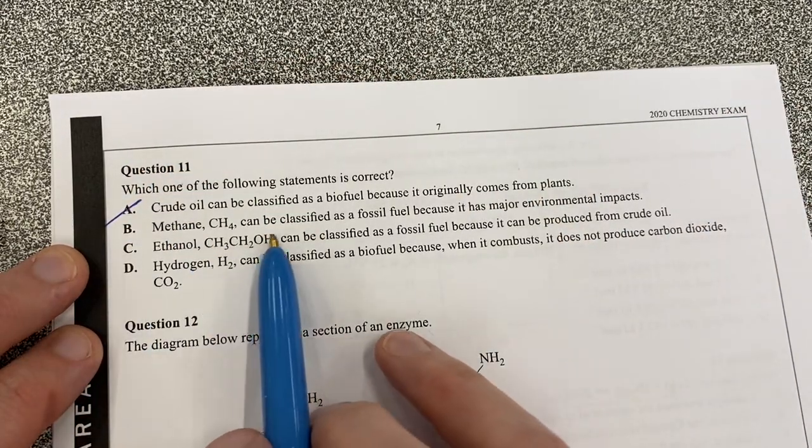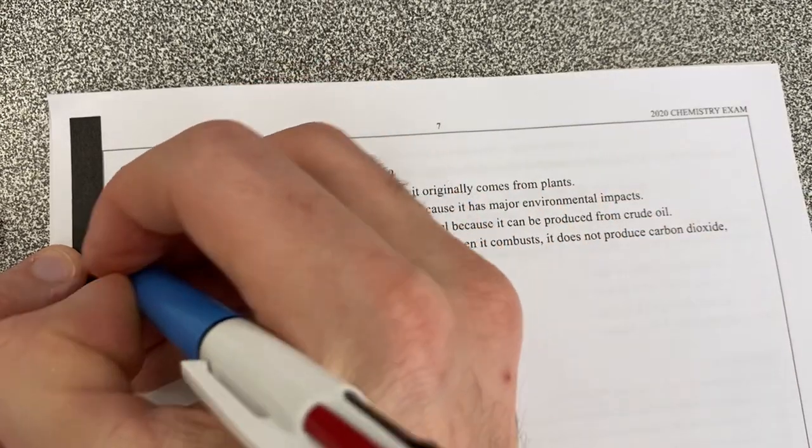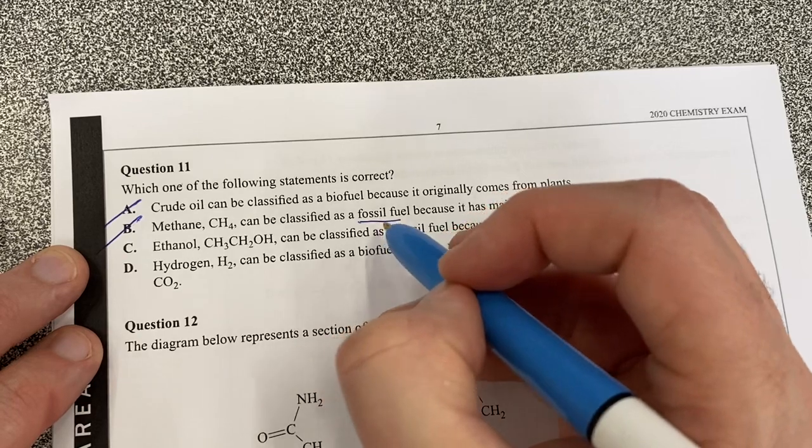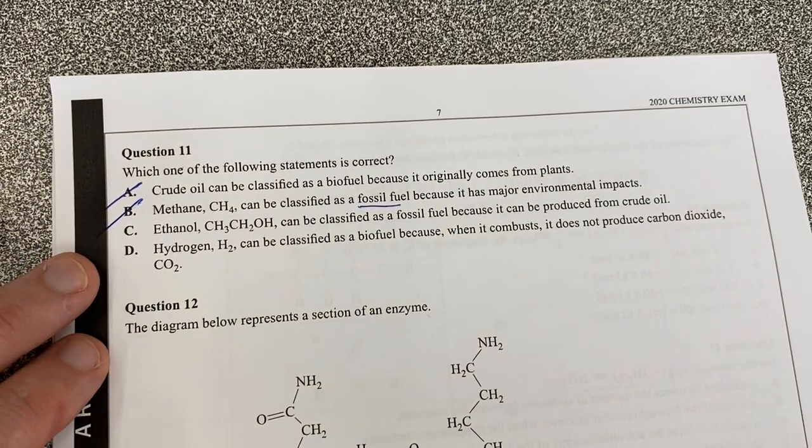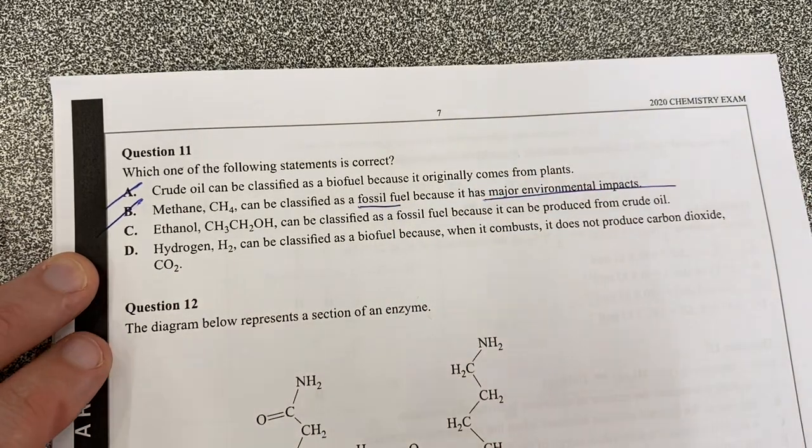Crude oil is a fossil fuel. Methane can be classified as a fossil fuel because it has major environmental impacts. That is not the reason for a fossil fuel. Fossil fuels means that they're going to run out eventually and that they take millions of years. So that explanation does not link in with what it actually is.